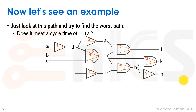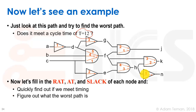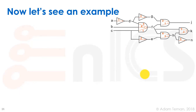Let's see an example of this. We have a combinatorial logic circuit where the start points are flip-flops and the end points are also flip-flops capturing the output. We want to find the worst path through all of these. We're given T equals 12 as the timing target, and we have library models of all the different timing arcs and gates. We want to fill in a table for each vertex with the RAT, AT, and slack to find out if we meet timing and identify the worst path.